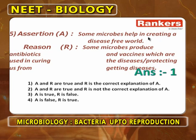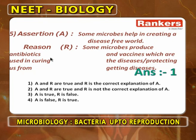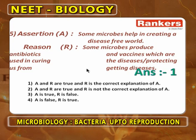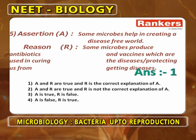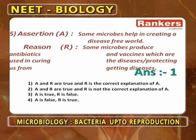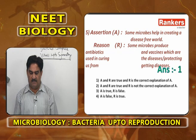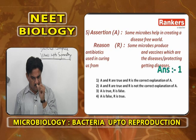Assertion-reasoning question: Some microbes help in creating a disease-free world — this is correct. The reason is that some microbes produce antibiotics and vaccines used in curing diseases or protecting us. For example, Streptomyces griseus gives streptomycin and cyclohexamide; Penicillium notatum gives penicillin. Both A and R are correct and R is the correct explanation of A.